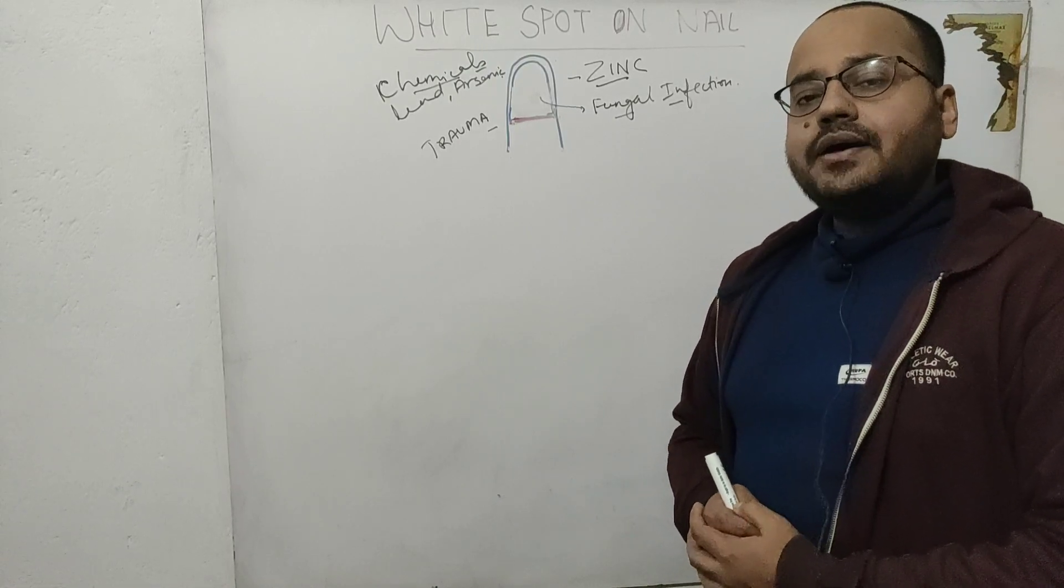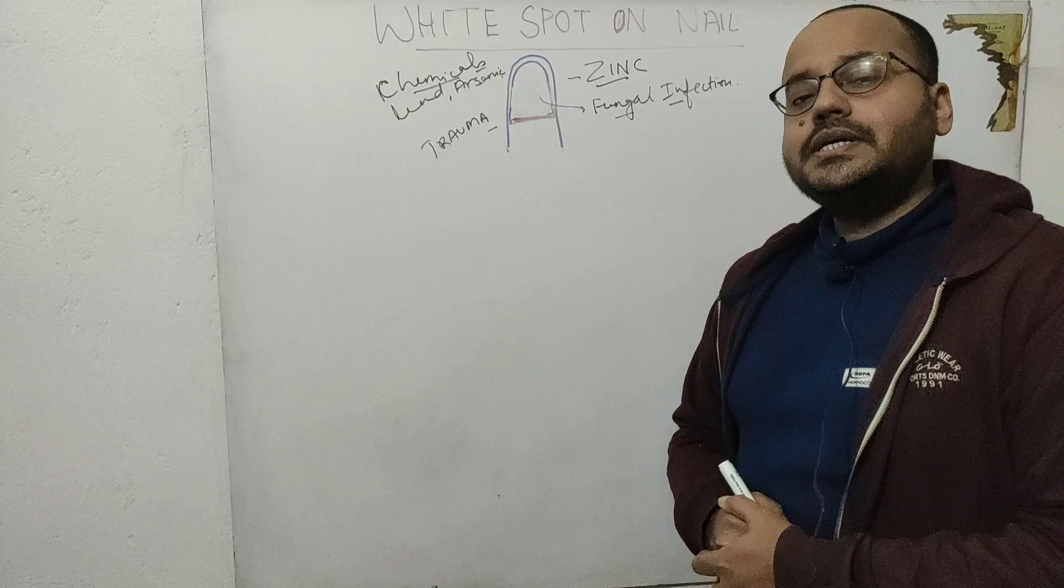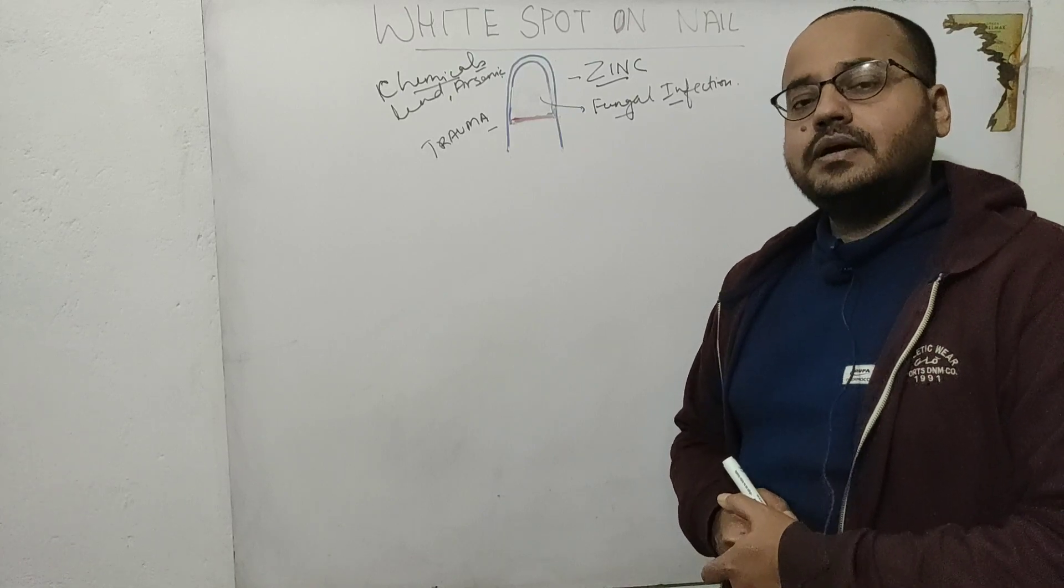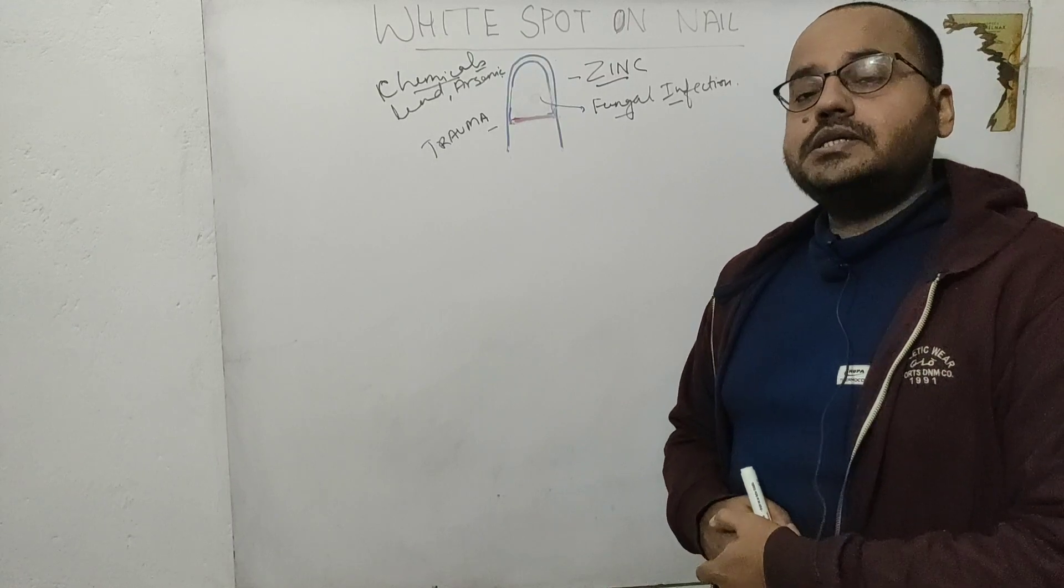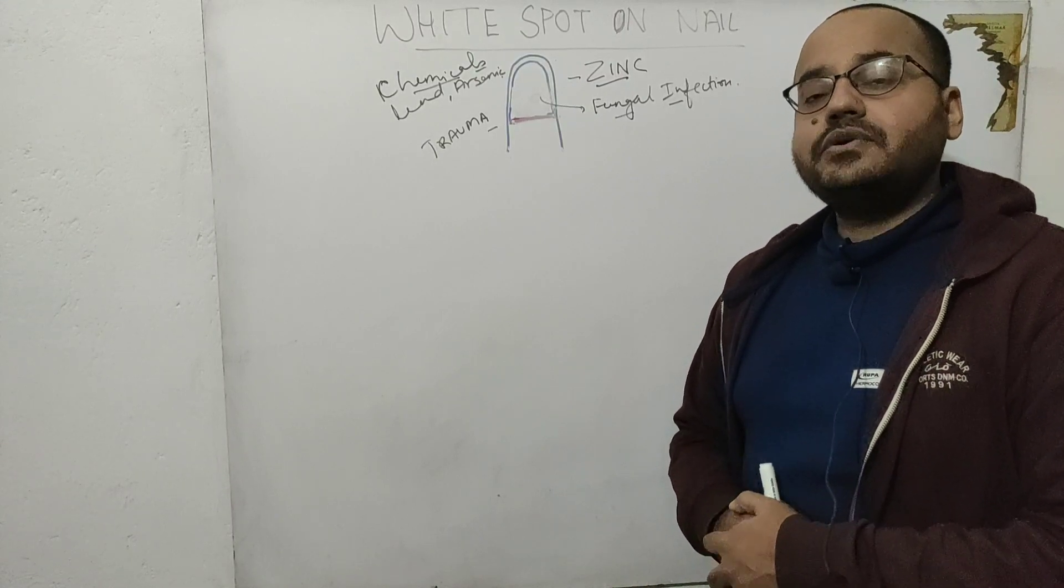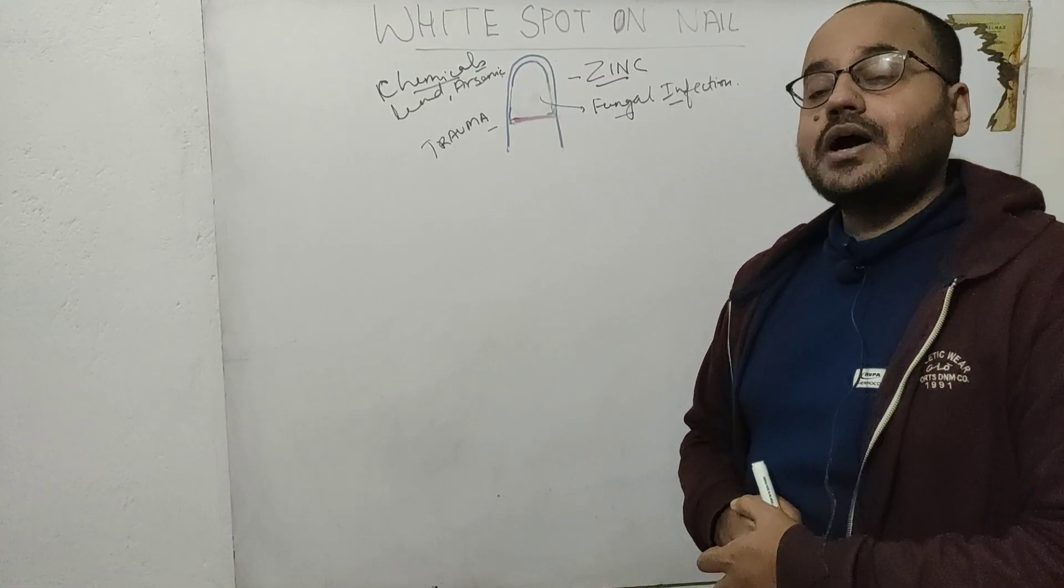If you have bluish nails, that can be a sign of Wilson's disease. If you have black nails, that can be a sign of Addison's disease. If you have red nails, that can be a sign of congestive cardiac failure.